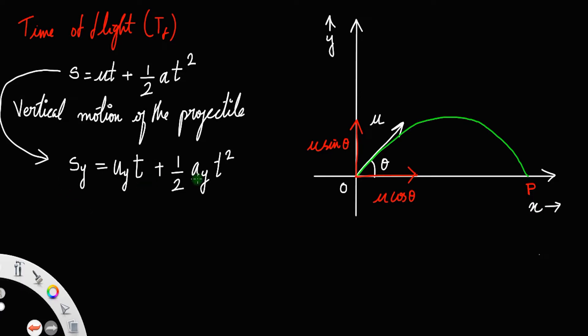What are the values of all these quantities? See, s_y is equal to—since it is projected from point O and came back to the same horizontal level, which means there is no vertical displacement for this projectile. It has a horizontal displacement, but there is no vertical displacement. So s_y is 0.